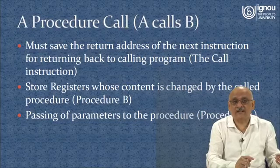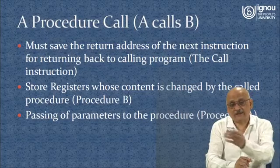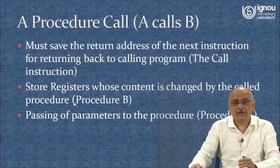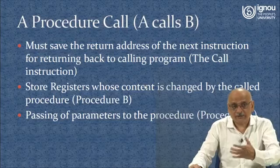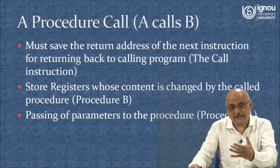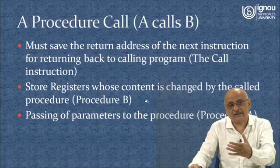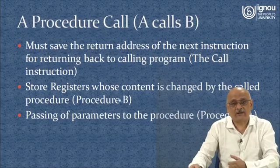We also store registers whose content is changed by the called procedure, because this is the side effect of a procedure call. If procedure A calls procedure B and procedure B changes some registers which were being operated by procedure A, then the values of those registers will get changed — that should not happen. When procedure B returns to procedure A, all the initial values of those registers should be maintained. Procedure A has its own set of values in those registers, and if changed, it may cause erroneous execution.